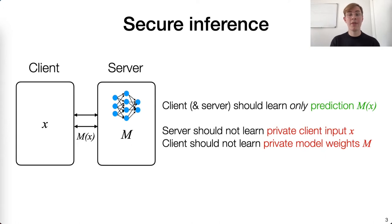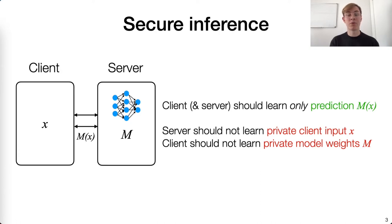In other words, we want to construct an efficient protocol for what we call secure inference, where after some interaction, the client and server learn only the prediction m of x and no other information. In more detail, the server should not learn any information about the client's private input x, and the client should not learn any information about the server's model weights m.